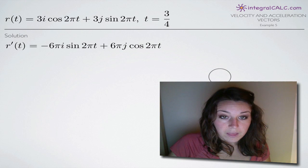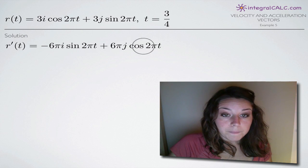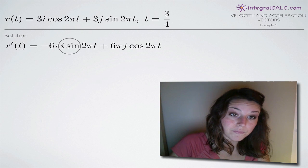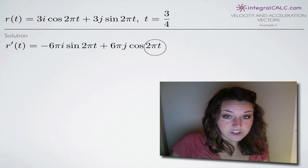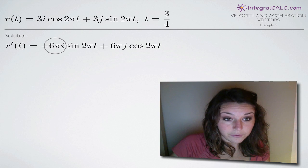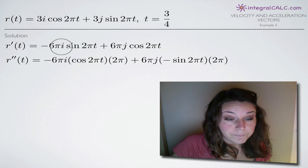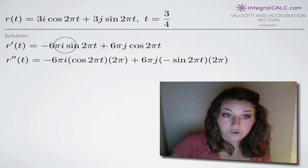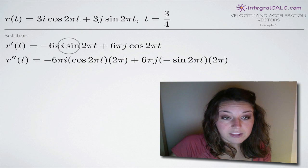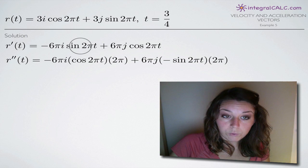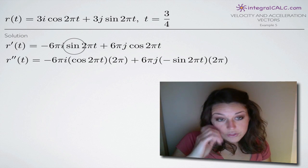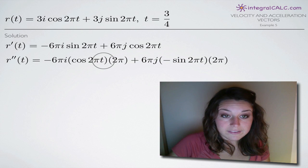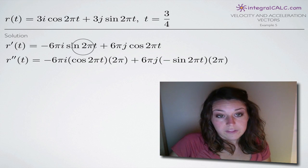Moving on to the acceleration vector, we pull our velocity vector formula before evaluating at t equals 3 fourths, because the acceleration vector is the second derivative. We start with our first derivative and take the derivative of it to get r double prime of t. The negative 6 pi i here is like a coefficient — we ignore i. Taking the derivative of sine of 2 pi t using chain rule: the derivative of sine is cosine, so we have cosine of 2 pi t, then multiply by the derivative of the inside function 2 pi t, which is 2 pi.